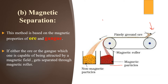For example, if we have an ore of iron — Fe₂O₃ — and pour it onto the magnetic roller, the iron part, being attracted by the magnetic field, will get collected in the magnetic particle container. The non-magnetic impurities will collect in a separate container. This is how magnetic separation works for ores.